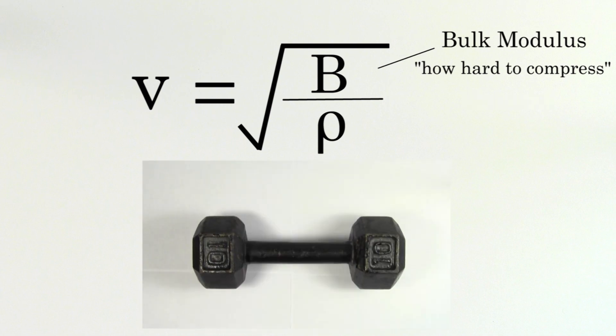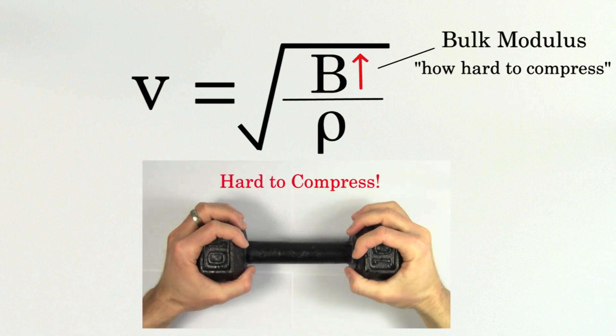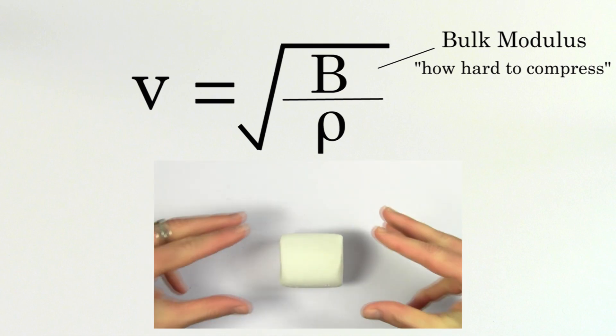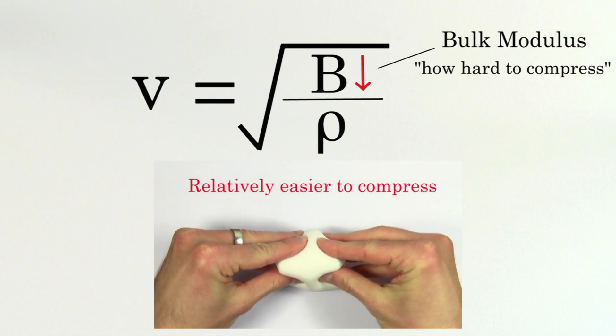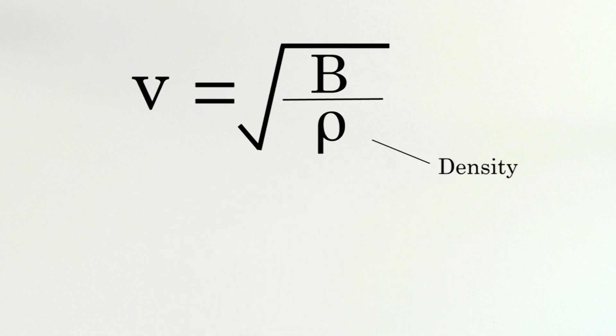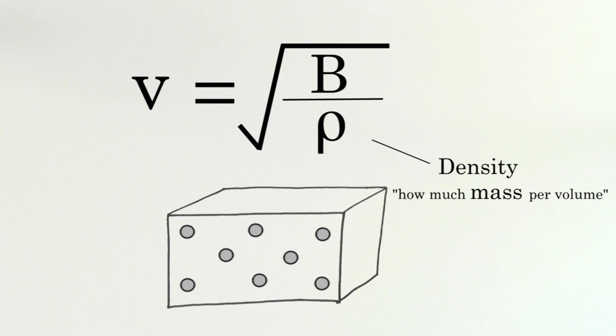Stiff rigid materials like metal would have a large bulk modulus. And more compressible materials like marshmallows would have a smaller bulk modulus. Rho is the density of the material. Since density is the mass per volume, the density gives you an idea of how massive a certain portion of the material would be.